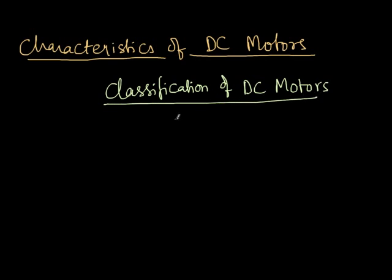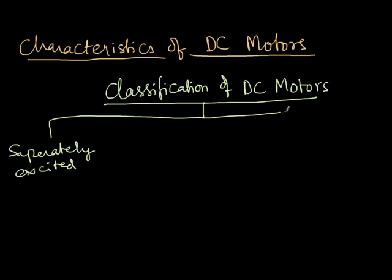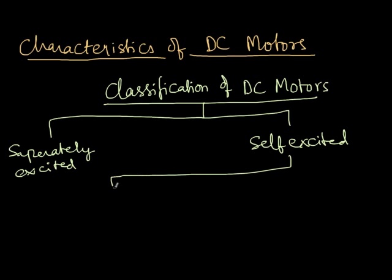Classification of DC motors - by classification I mean what are the different types of DC motors. One type is separately excited and the other is self-excited. Under self-excited, as you already have seen, we have shunt, we have series, and we have compound motors.